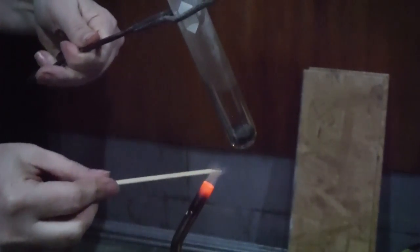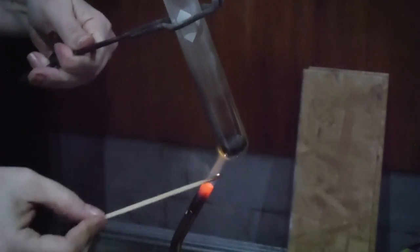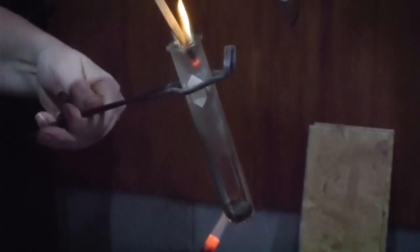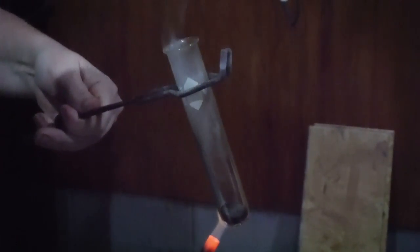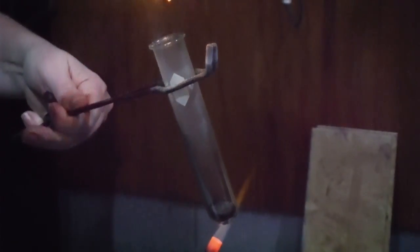So what you're going to see me do now, I'm going to bring in a wooden splint and light it and stick it down in the test tube. This is one of the observations you need to make. And then just after this video ends, you're going to see what the copper carbonate looks like when I dumped it out of the test tube and back into that dish.